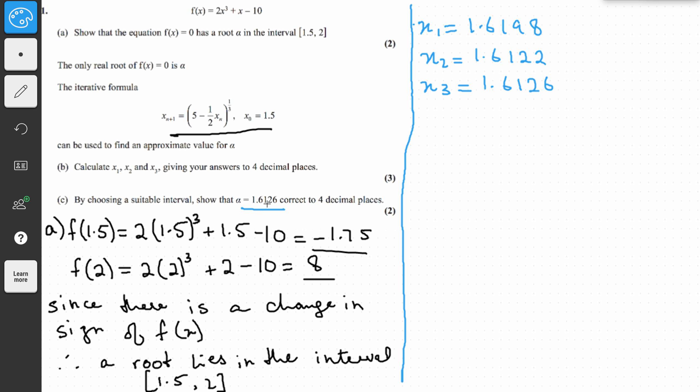You can write it as 1.61255, because 1.61255 is 1.6126 correct to 4 decimal places, and 1.61265. So basically one unit.